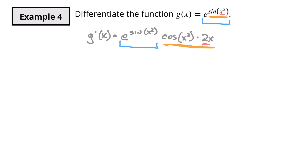So g prime of x equals 2x times e to the sine of x squared, times cosine of x squared. I put 2x first so the e doesn't look mixed in. You can see that you can have a compounding of chain rules — a chain rule within a chain rule. I don't think we'll go much further than that, but it is possible. I hope that was helpful. If it was, make sure you like the video, give me a thumbs up, and I'll see you in the next one.